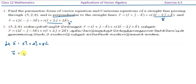Therefore, b vector is equal to 2 i cap minus 2 j cap plus k cap. Next, d vector is equal to i cap plus 2 j cap plus 2 k cap.